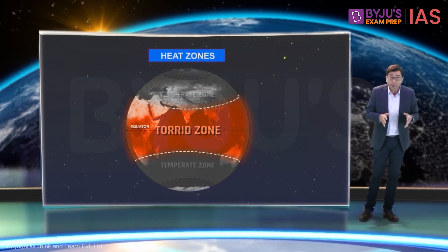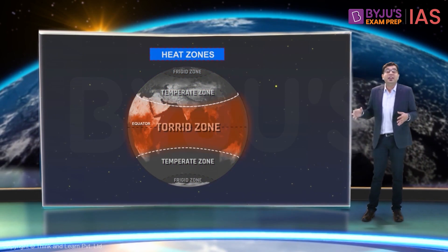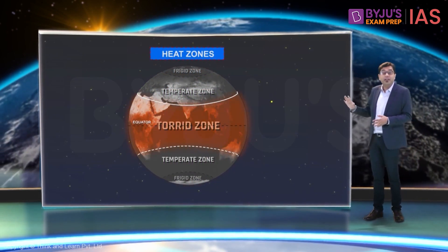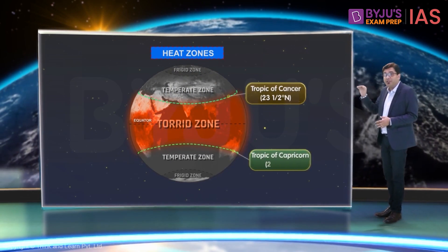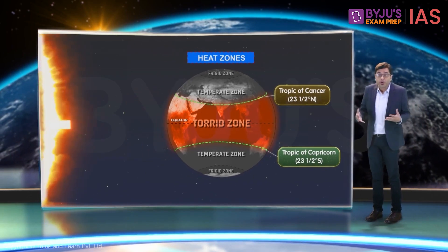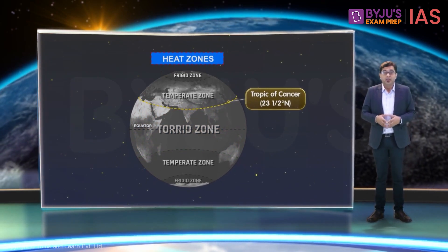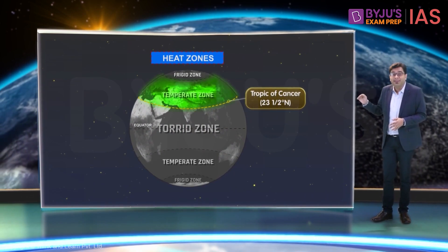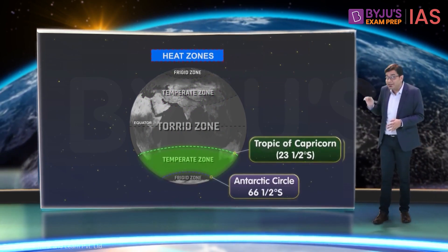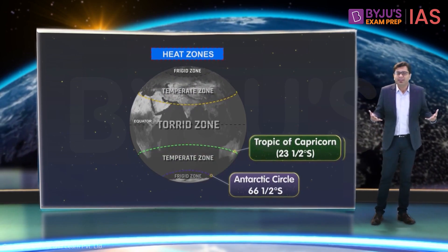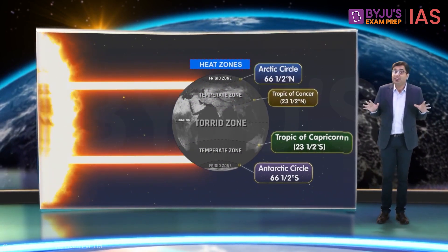We have the torrid zone, the temperate zone, as well as the frigid zones. The torrid zone is the largest thermal zone, covering around 50% of the Earth's surface. It is located between the Tropic of Cancer in the north and the Tropic of Capricorn in the south. This region is hot as it experiences vertical sun rays almost throughout the year. The zone between the Tropic of Cancer and the Arctic Circle in the northern hemisphere, and between the Tropic of Capricorn and the Antarctic Circle in the southern hemisphere, has moderate temperatures — these are called the temperate zones. The sun's rays never fall vertically in the temperate zone.